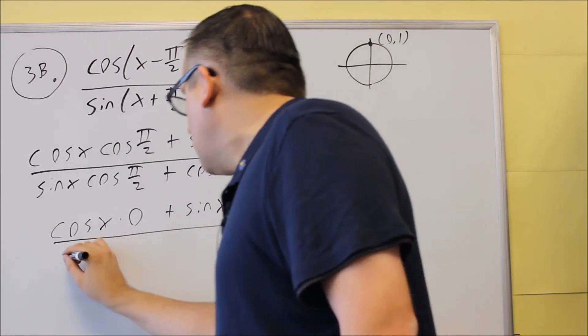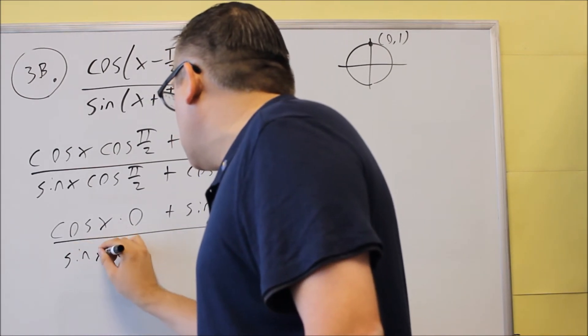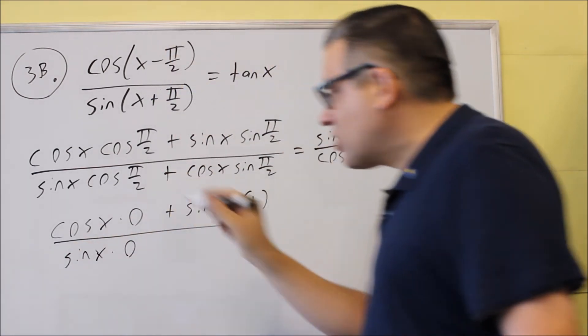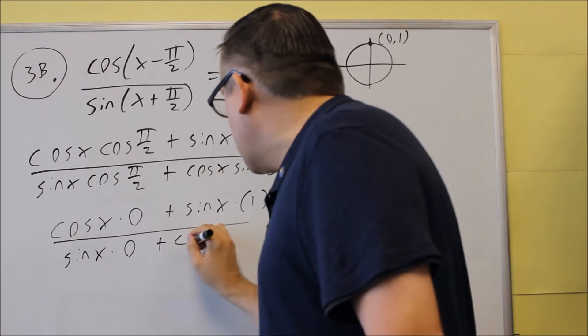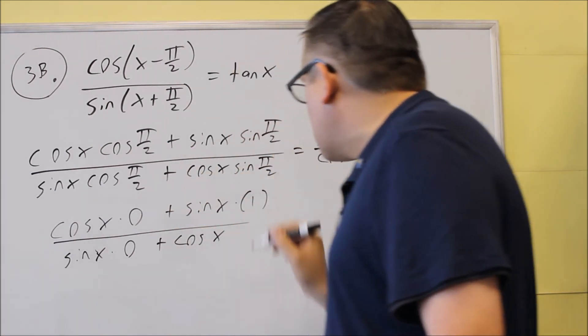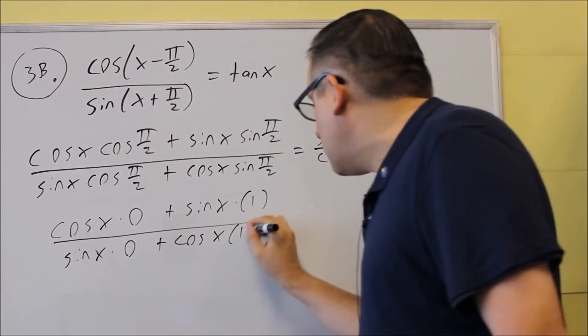On the bottom, sine x times cosine pi over 2, same value as before, we have a 0 in there. Plus cosine x times sine pi over 2, it's still going to be 1.